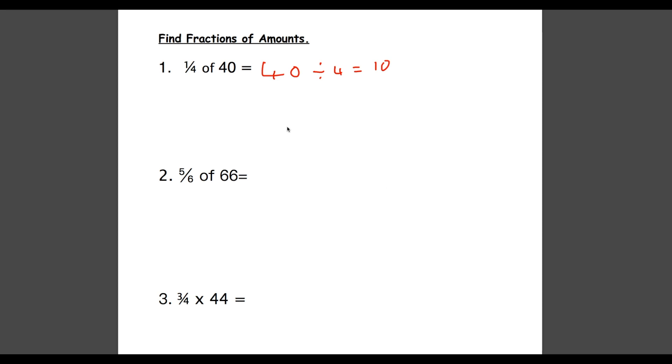Okay, following the same steps for the second question. First we divide by the denominator, the bottom number. 66 divided by 6 equals 11. And again we multiply by the numerator. So 11 multiplied by 5 equals 55. So our answer is 55.